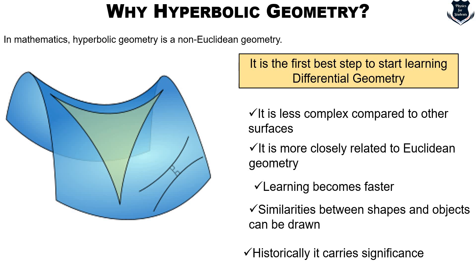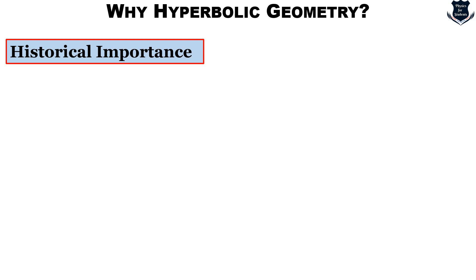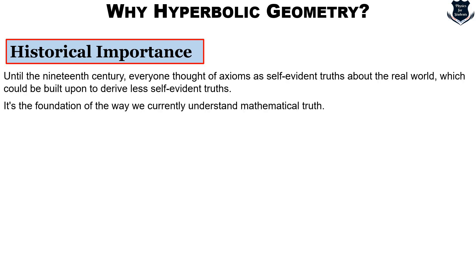And historically it carries a significance. The discovery of hyperbolic geometry was in my opinion the second most important event in the history of mathematics, the first obviously being Euclid's introduction of the axiomatic method. Now up until the 19th century everyone thought of axioms as self-evident truths about the real world which could be built upon to derive less self-evident truths.